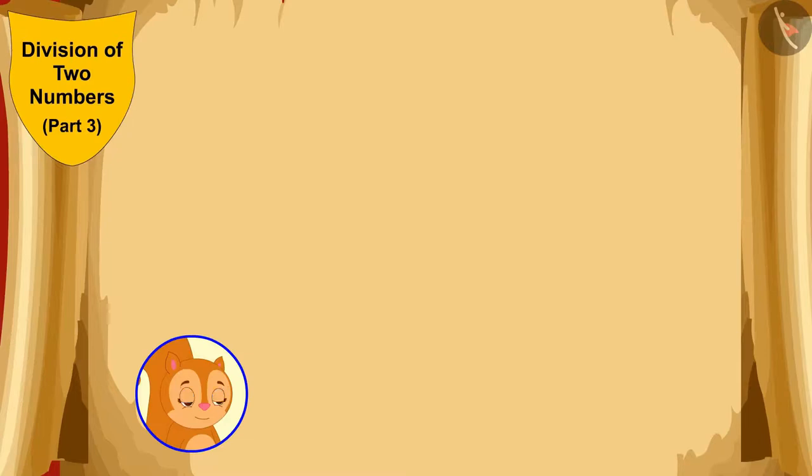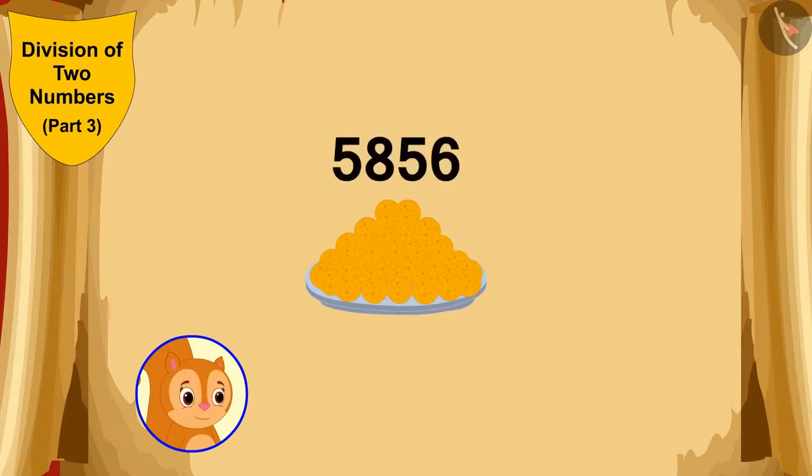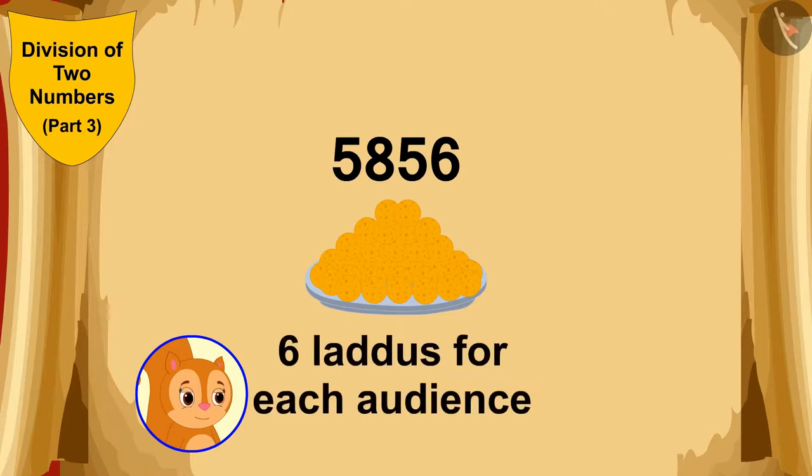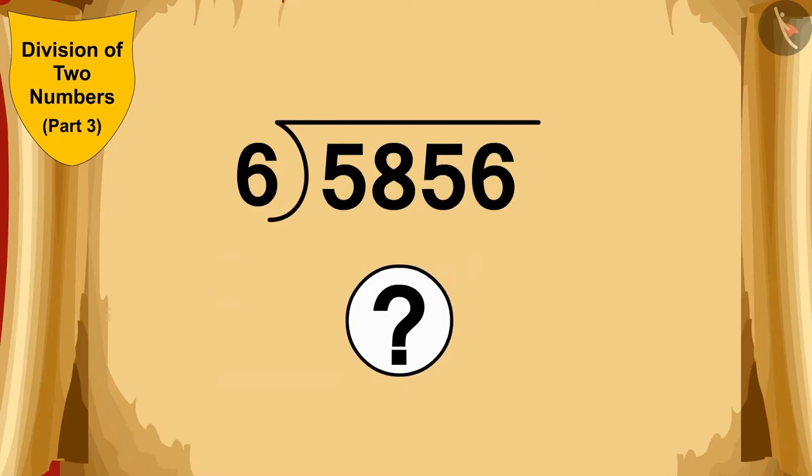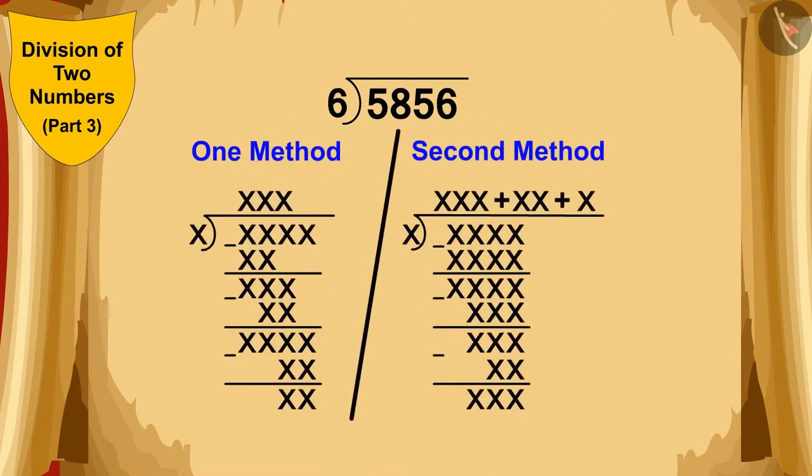Chanda also has to arrange laddus for the audience coming to watch the play. Chanda has a total of 5,856 laddus. If she has to arrange for 6 laddus for each audience, can you guess if Chanda has enough laddus for 976 spectators? To solve this problem, you should use one method of division, and ask your friend to divide it by another method. Is the answer that both of you got exactly the same?